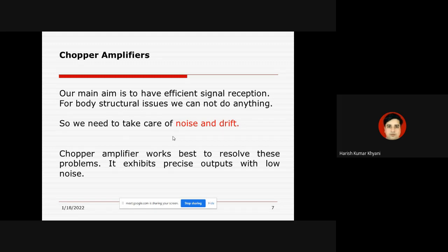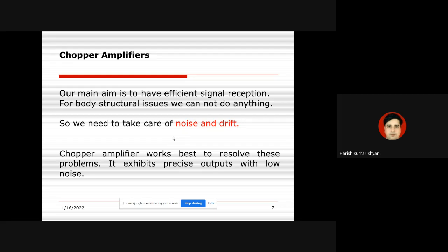Our main aim is to have efficient signal reception. For body structural issues like the five layers of skin, muscles, bones, and body fluid, we cannot do anything. So we need to take care of the other issues: noise and drift. The chopper amplifier is mainly used to tackle these two issues, and it works best to resolve these problems, exhibiting precise output with low noise.